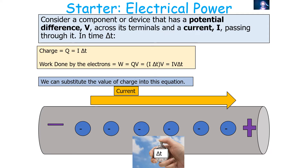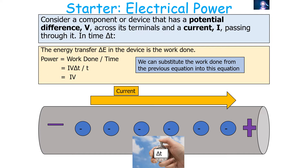Substituting the expression for charge, the energy transfer delta E in the device is the work done. Since power equals work done over time, we substitute to get P = IV·delta t / t. The delta t terms cancel, giving us P = IV — a well-known equation from GCSE physics.